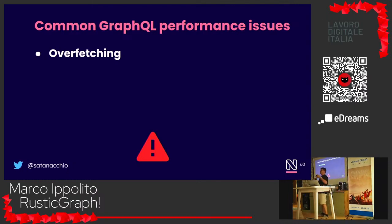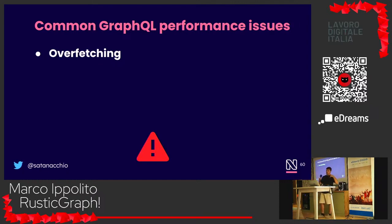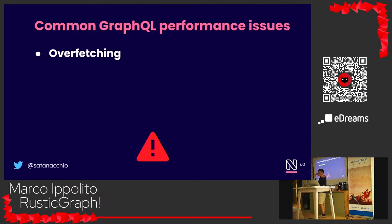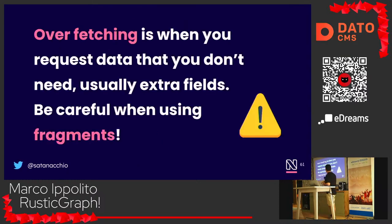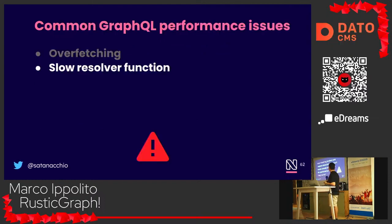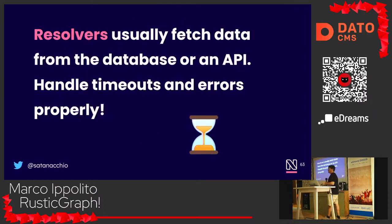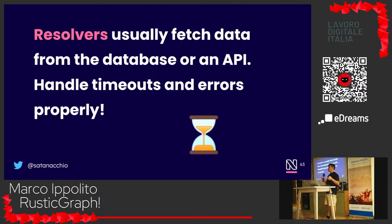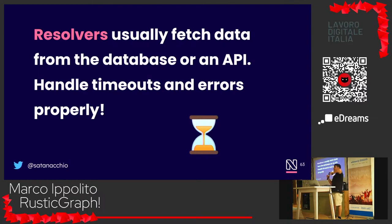In a federation, if you're asking for an extra field that lives in another service, you're going to trigger an extra HTTP call over the network for that extra field — which could easily be avoided. The most important thing is to be careful when using fragments. The other common issue is the slow resolver function. Resolvers usually fetch data from APIs or databases, and you need to handle timeouts and errors properly, because long timeouts will cause the whole GraphQL call to take a long time.